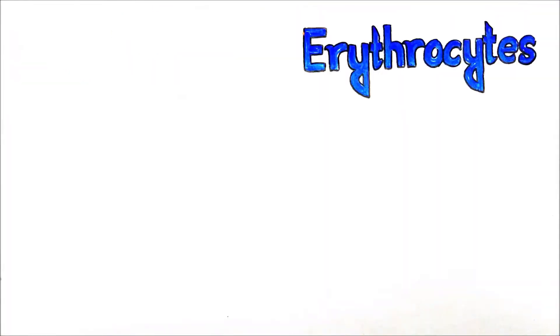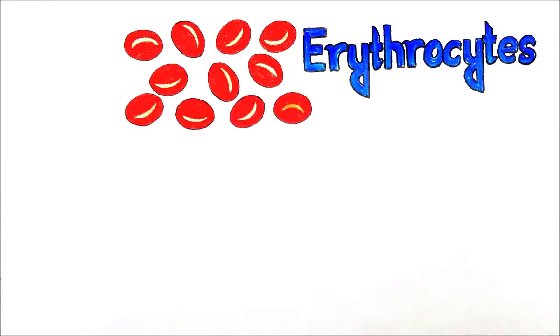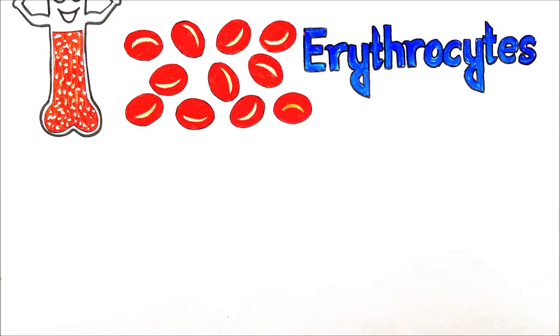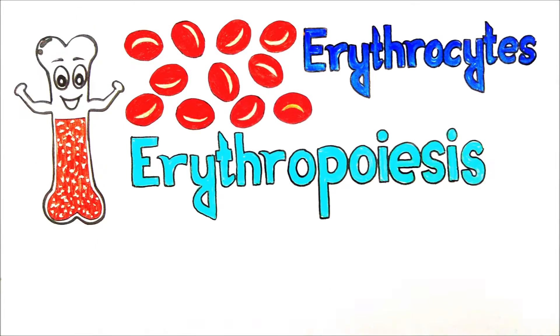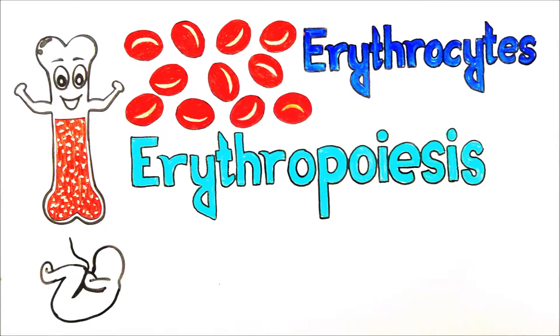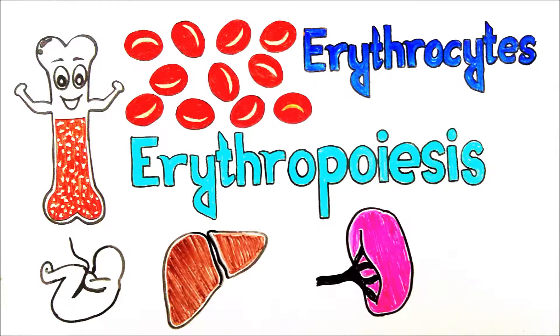The RBC, also called erythrocytes, are the most common type of blood cells. They are produced in bone marrow by erythropoietic cells through a process known as erythropoiesis. But when you were in your mother's womb, they were produced by your liver and spleen.